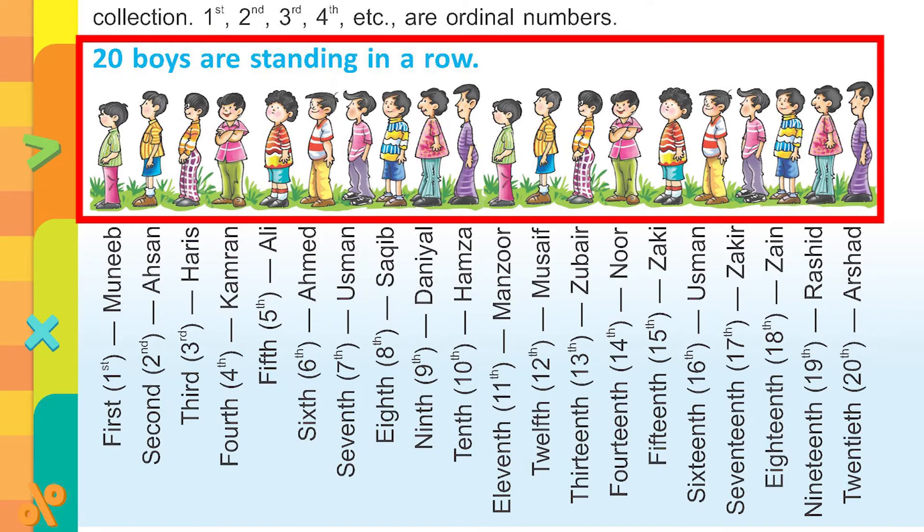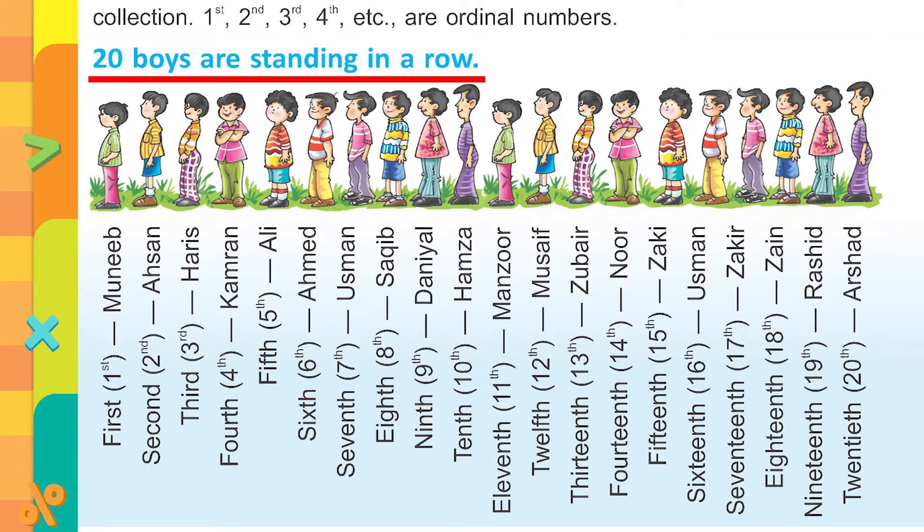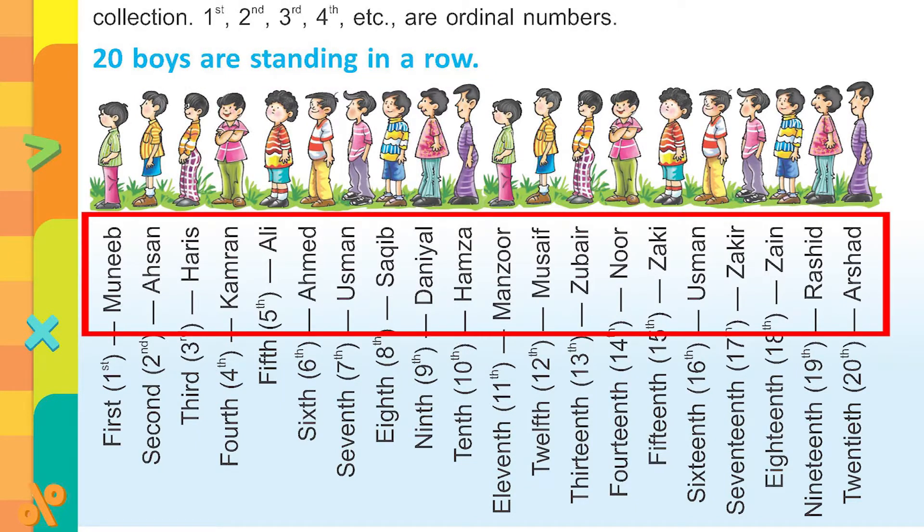Now if you look at the boys standing in a row, just count how many boys are there in all. Start counting from 1, 2, 3. Yes, move on, 17, 18, 19, 20. Yes, there are 20 boys in all and their names are also written there.